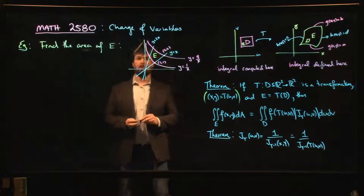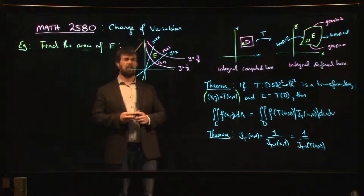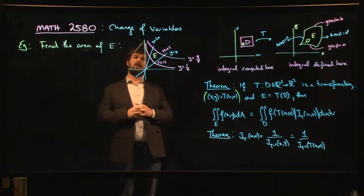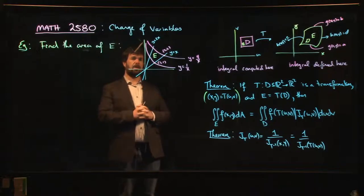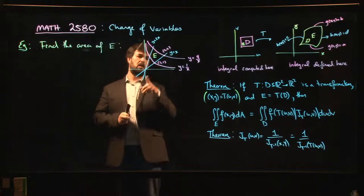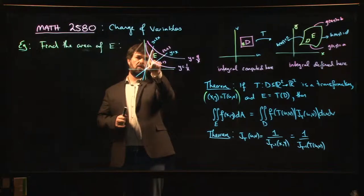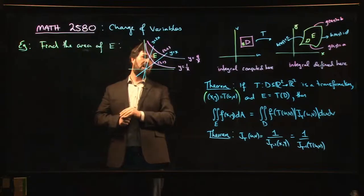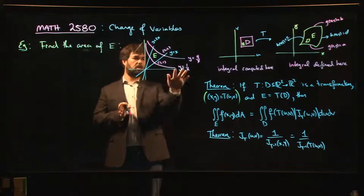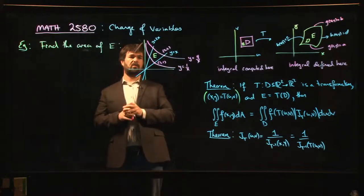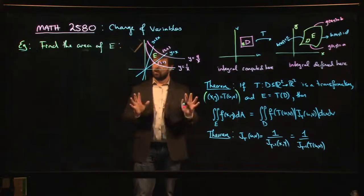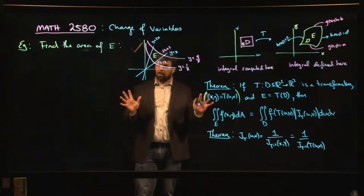We're going to do one more change of variables example. Here's a region in the plane — it's bounded by a couple of lines through the origin: y equals x and y equals 2x, and also bounded by a couple of hyperbolas: y equals 1 over x and y equals 4 over x. We want to find the area of this region.